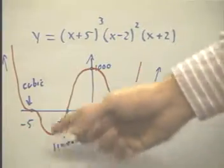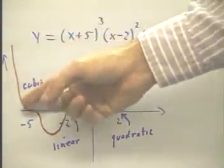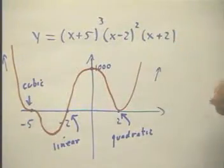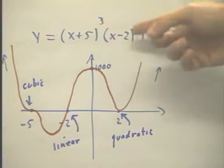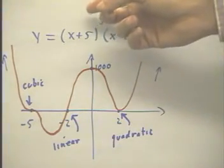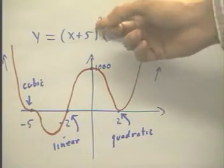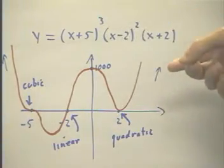The far left and far right behavior are both positive, since this function has an even degree. The degree is 3 times 2 times 1 is 6.